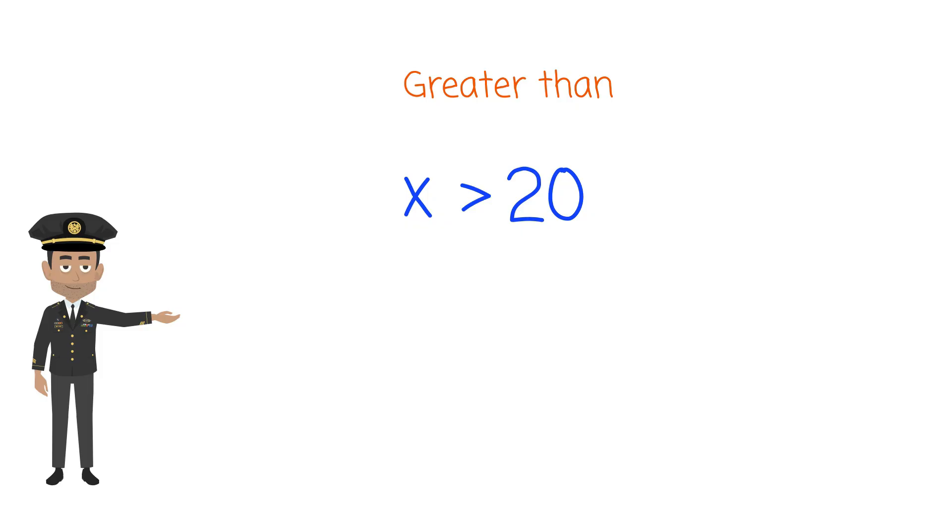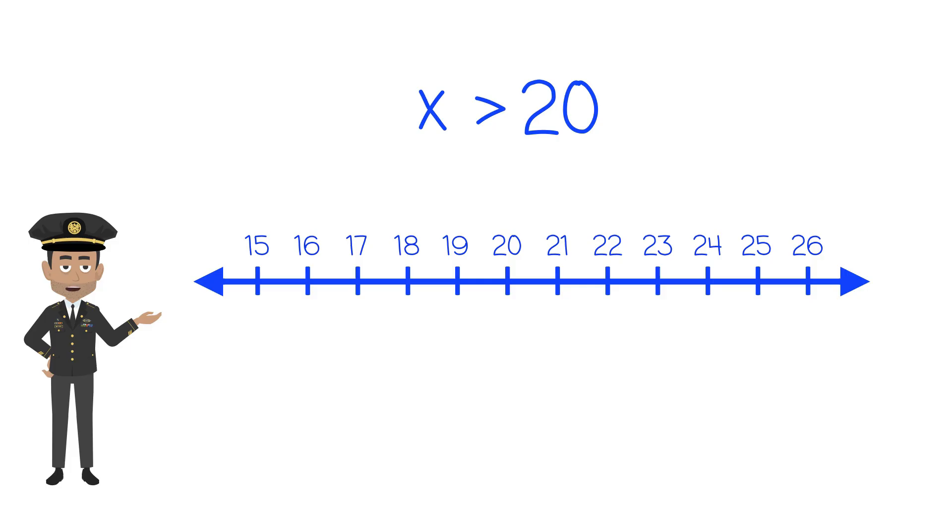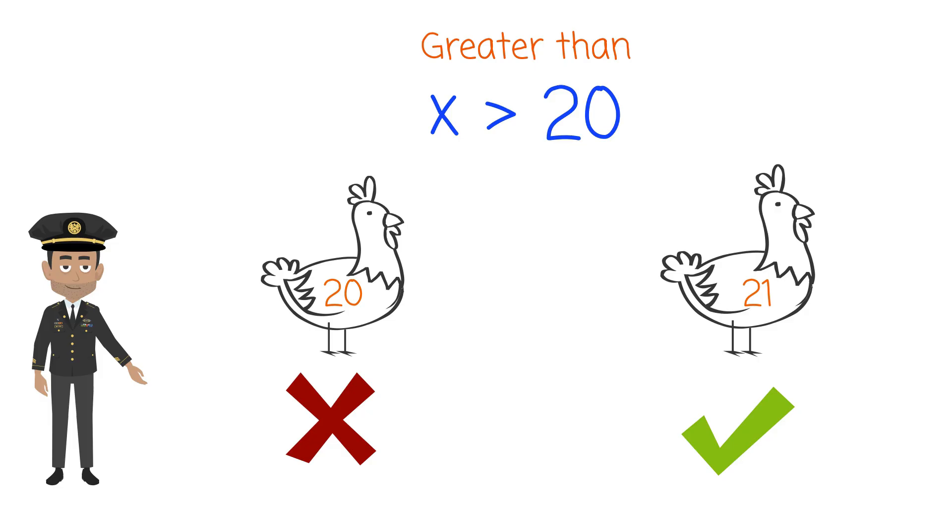Let's look at it on a number line to help understand. To show that it is greater than 20, we use an open circle on the number line. This means that 20 is not included. We then show a solid arrow to include all numbers above 20 to infinity. So a 20 pound chicken or anything less than 20 pounds could not pass through, but a 21 pound chicken could.